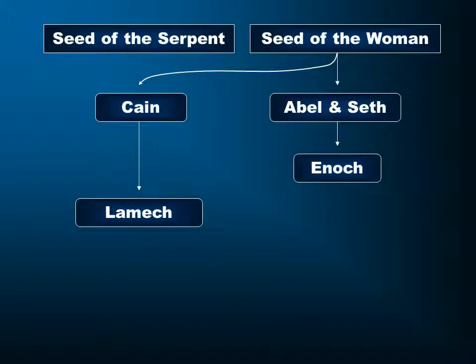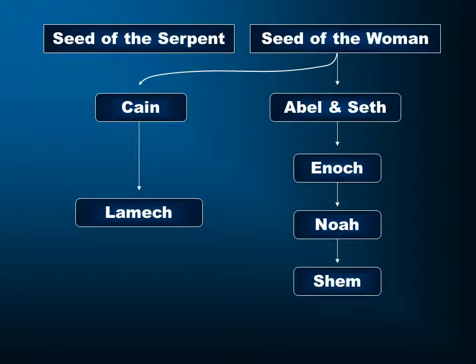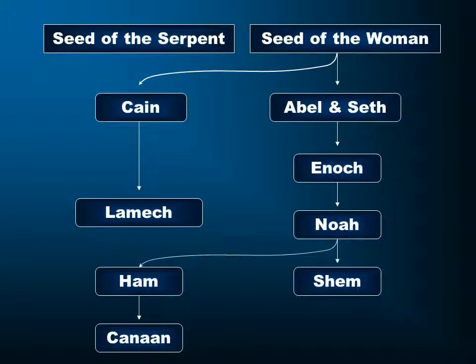Now we noted before the seed of the serpent and seed of the woman. Spiritually speaking, Cain seems to have followed the seed of the serpent, and that genealogy is traced in Genesis chapter 4 all the way down to Lamech. Now we move over to Seth, who gives rise to Enoch who walks with God, and that line follows down to Noah, through whom God saves the world in the ark. The promise has now continued to Shem — bypassing Ham, whose son Canaan was cursed — and through Noah, through Shem, through a number of generations, it will come eventually to Abraham.